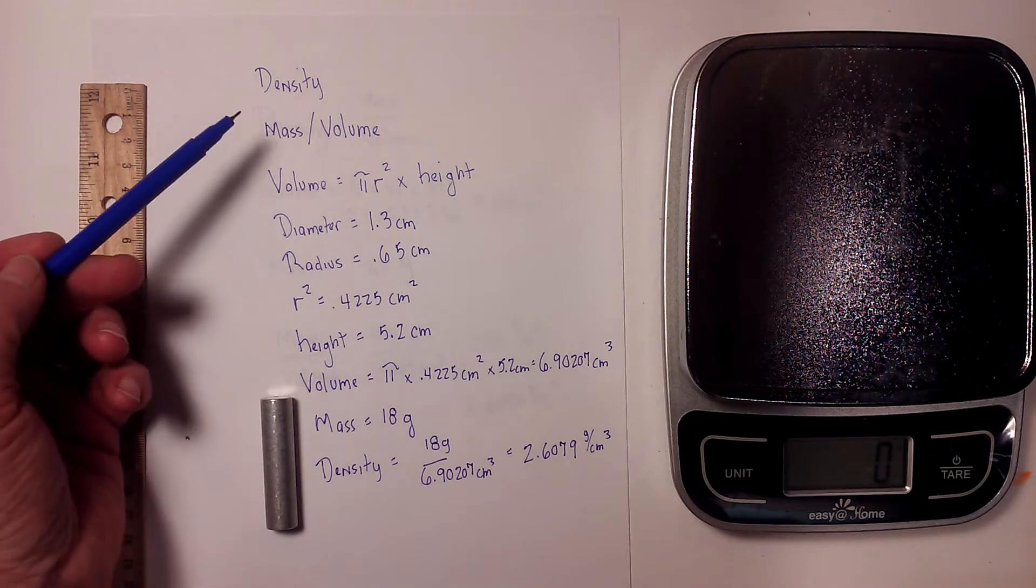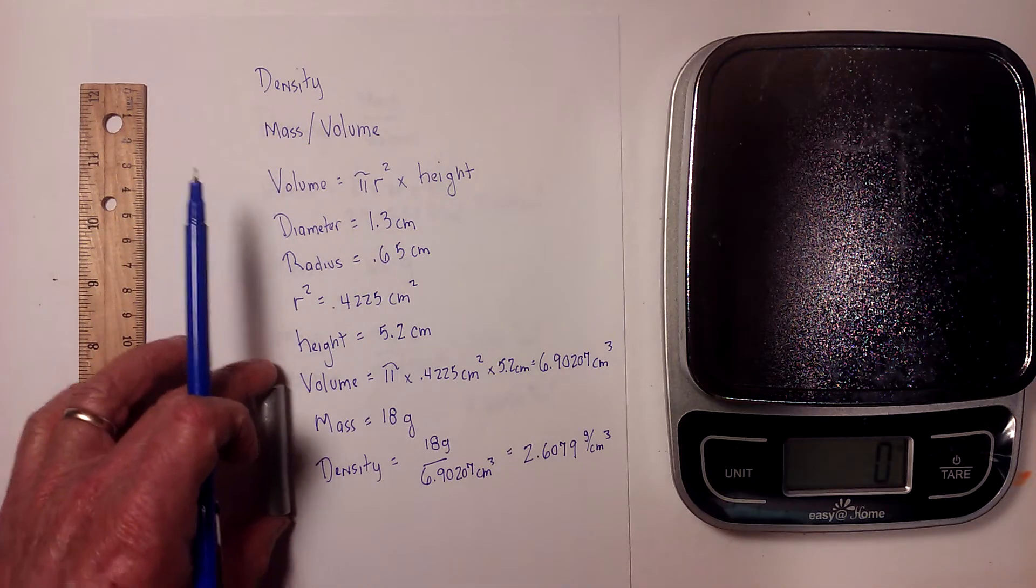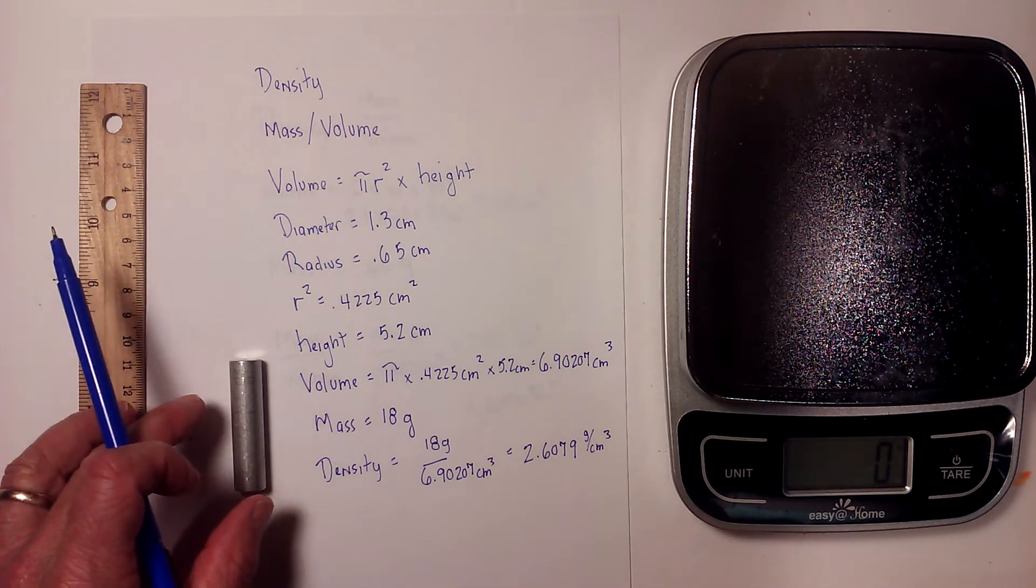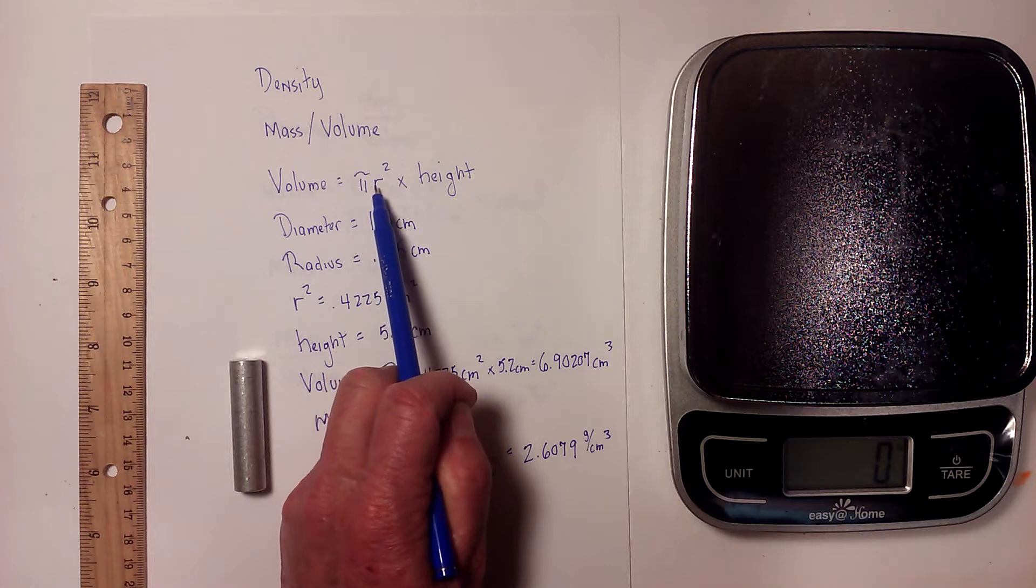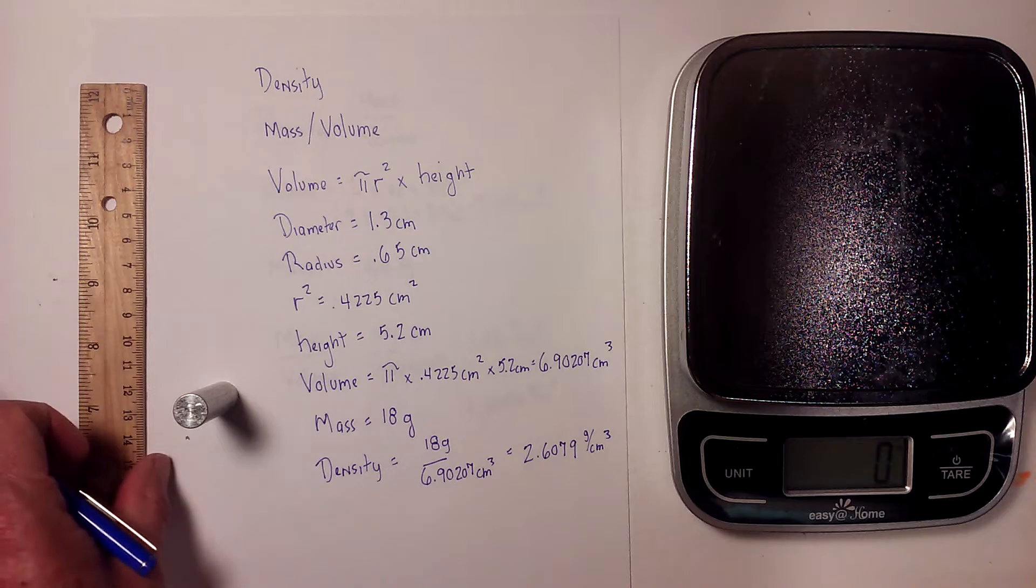First, the formula for density is mass divided by volume. The formula for calculating the volume of a cylinder is pi times the radius squared times the height. Now I can get the radius squared by first measuring the diameter.